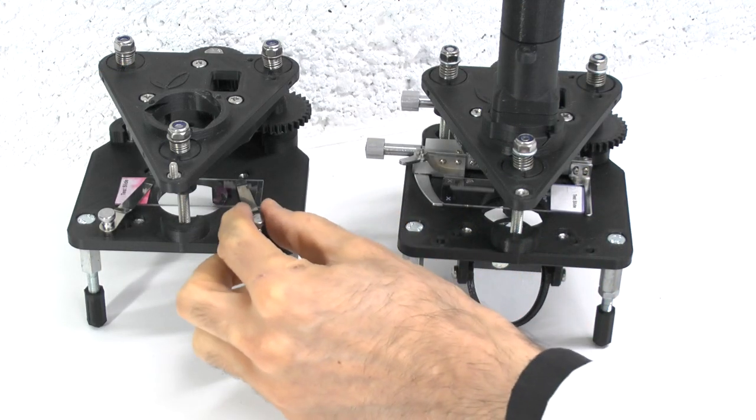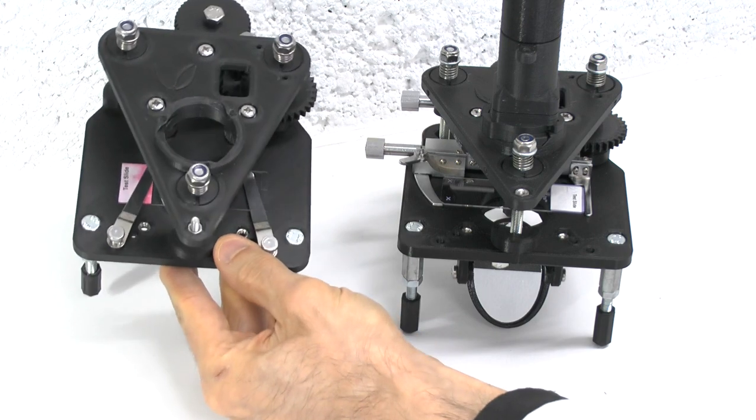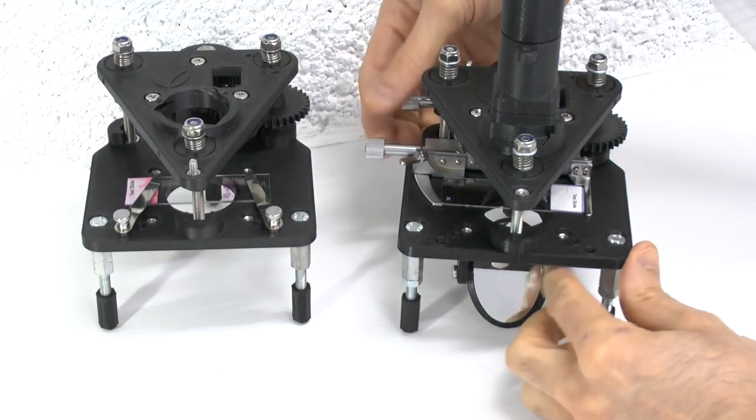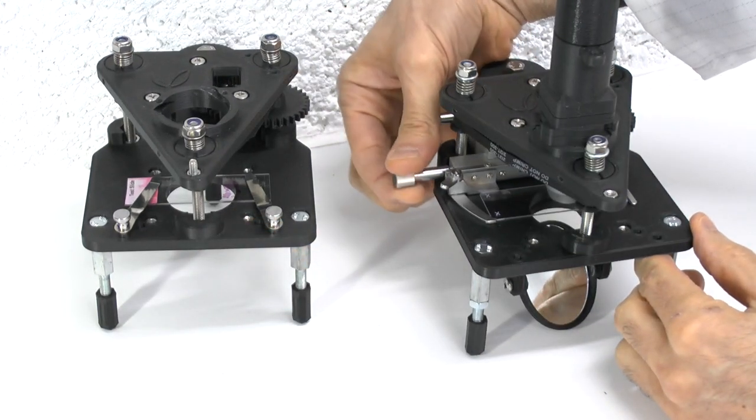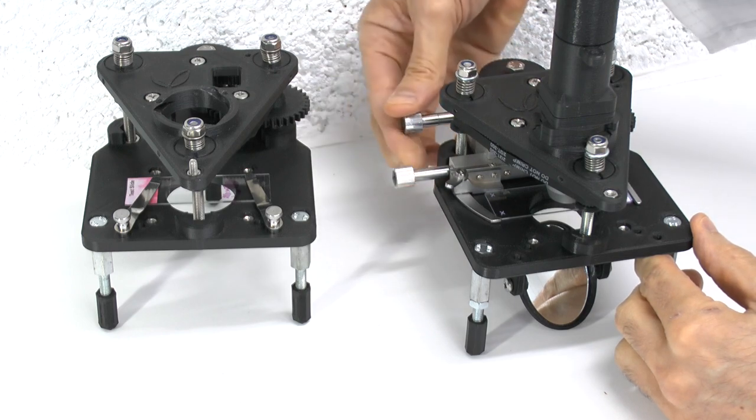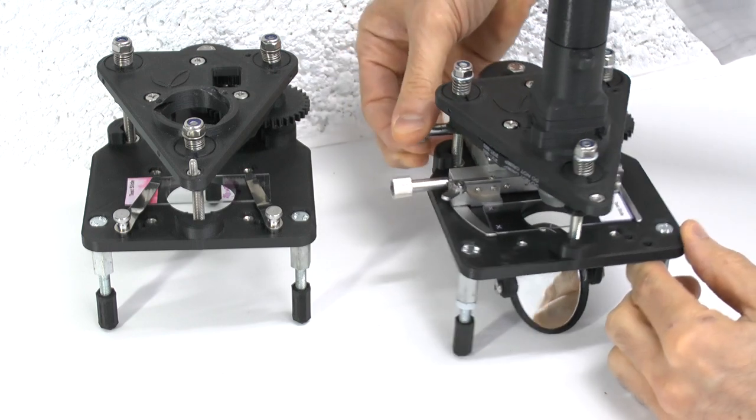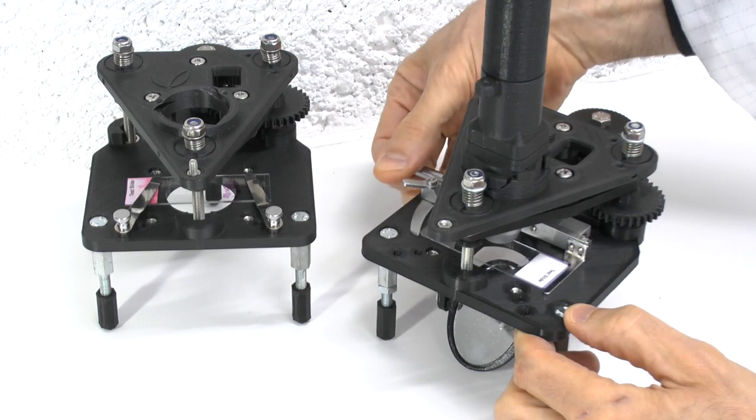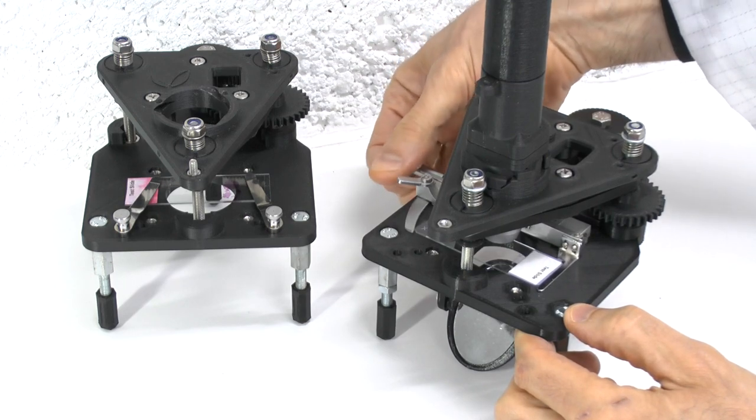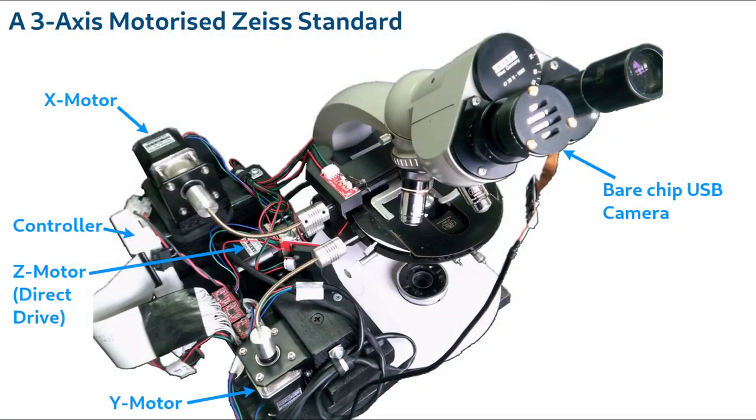While stage clips are great for holding a slide still on the stage, if you want to move a slide around, either to screen it or to chase a moving target, then a precision mechanical XY slide holder is preferable. Mechanical slide manipulators can also be motorized for computer-controlled slide scanning or automated specimen tracking, although I won't be describing motorization in this video.